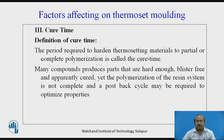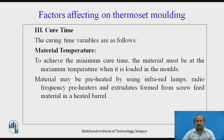The third important factor affecting thermoset molding in compression molding is cure time. The period required to harden the thermoset material to partial or complete polymerization is called the cure time. Many compounds produce parts that are hard enough, blister-free, and apparently cured, yet the polymerization of the resin system is not complete — a post-bake cycle may be required to optimize the properties. To achieve the minimum cure time, the material must be at maximum temperature when loaded in the mold. Material may be preheated using infrared lamps, radio frequency preheaters, and extruders or screw feed material in a heated barrel.